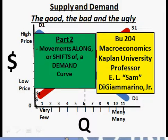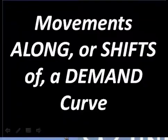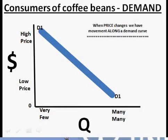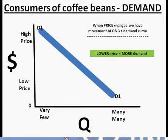Here we are folks, back again with part two, and we're going to continue our look at the demand curve. We're going to begin by looking at movements along the curve. Remember that our demand curve is downward sloping and to the right, and what this tells us is that when the price changes, we will have movement along the demand curve.